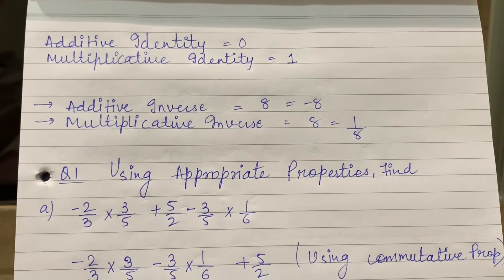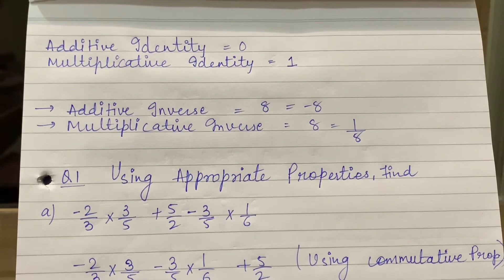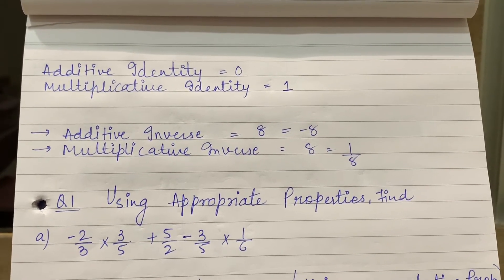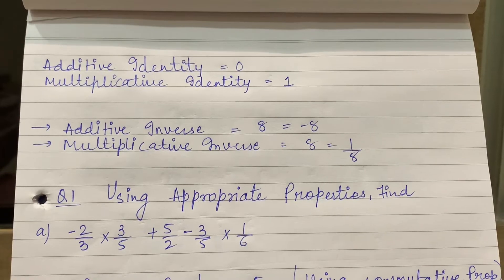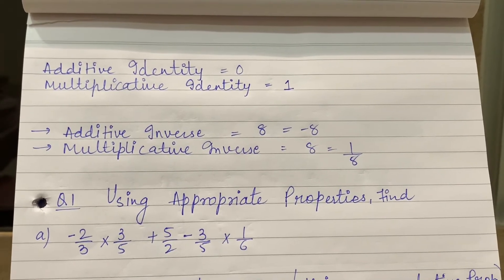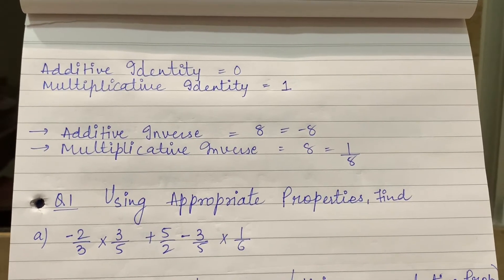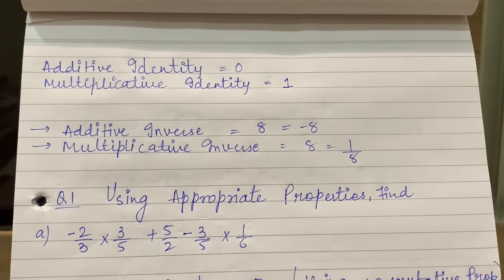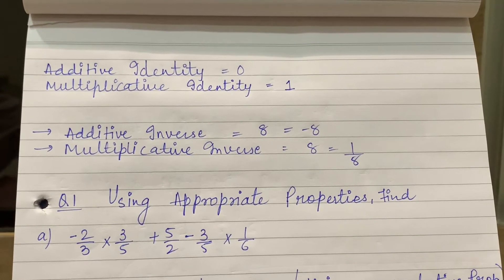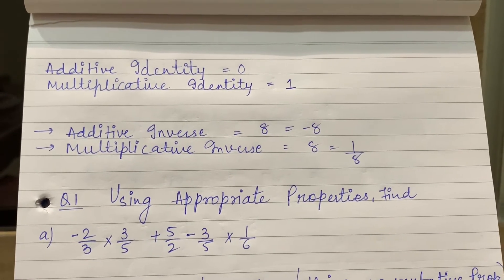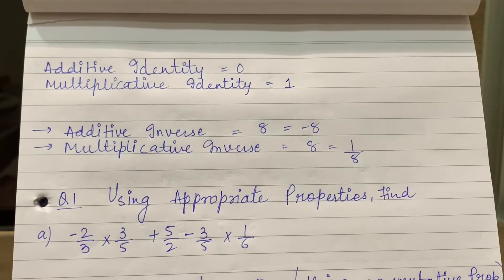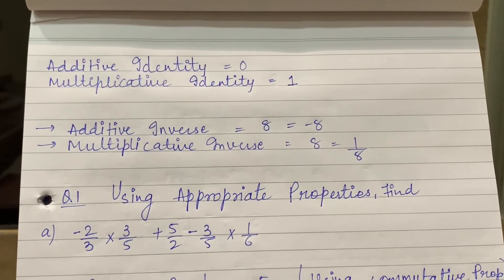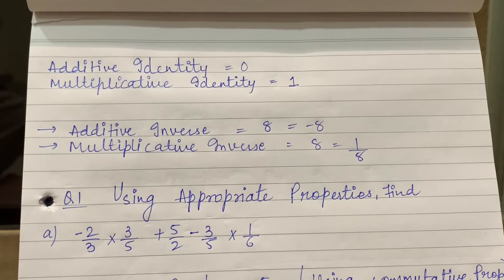Similarly, if I use 1 in additive identity — if I add 2 plus 1, then it will be 3, so 2 is not preserved. So, additive identity is 0, meaning if I add 0, any number will not change — it will remain the same. If I multiply by 1, then any number will remain as it is. It will not change. So, multiplicative identity is 1 and additive identity is 0.